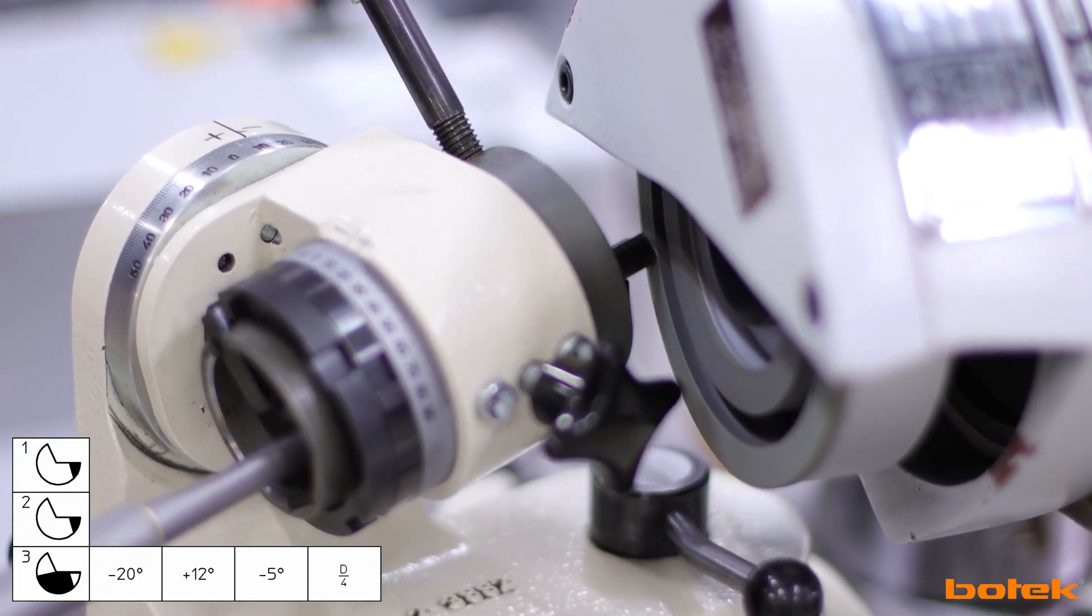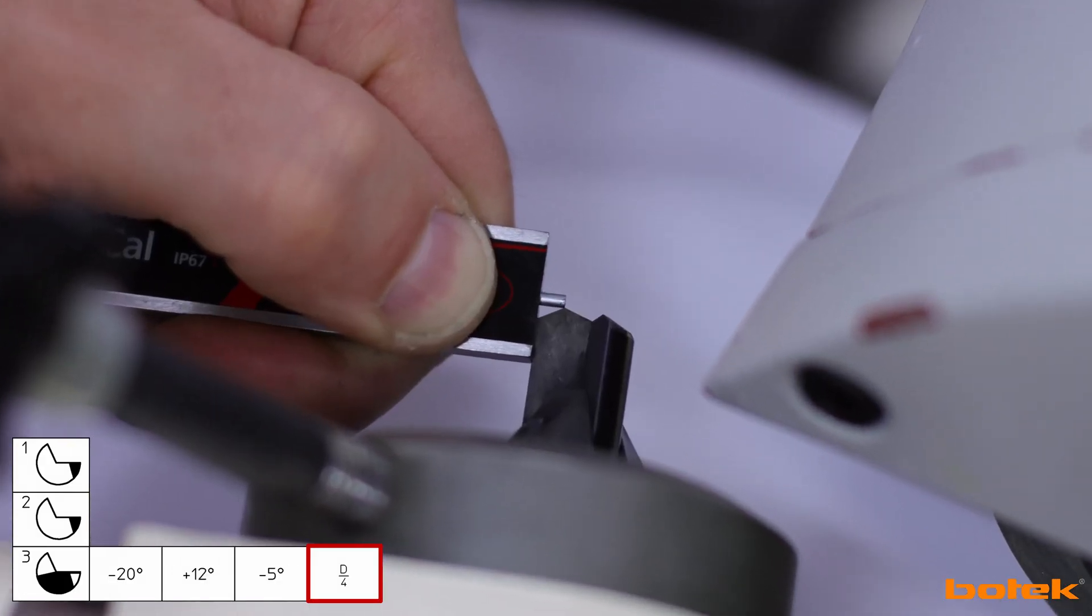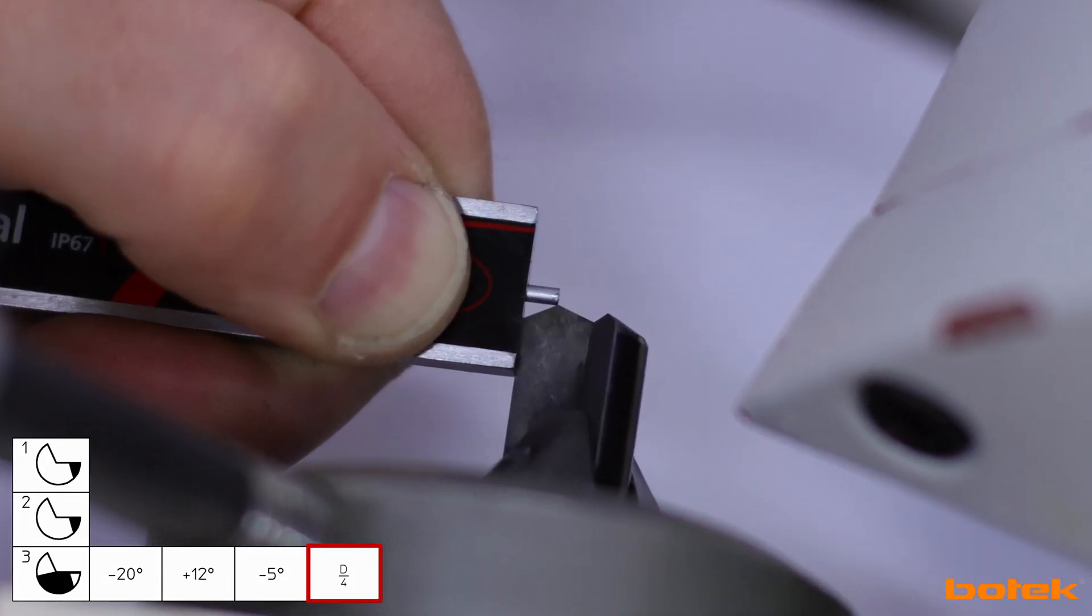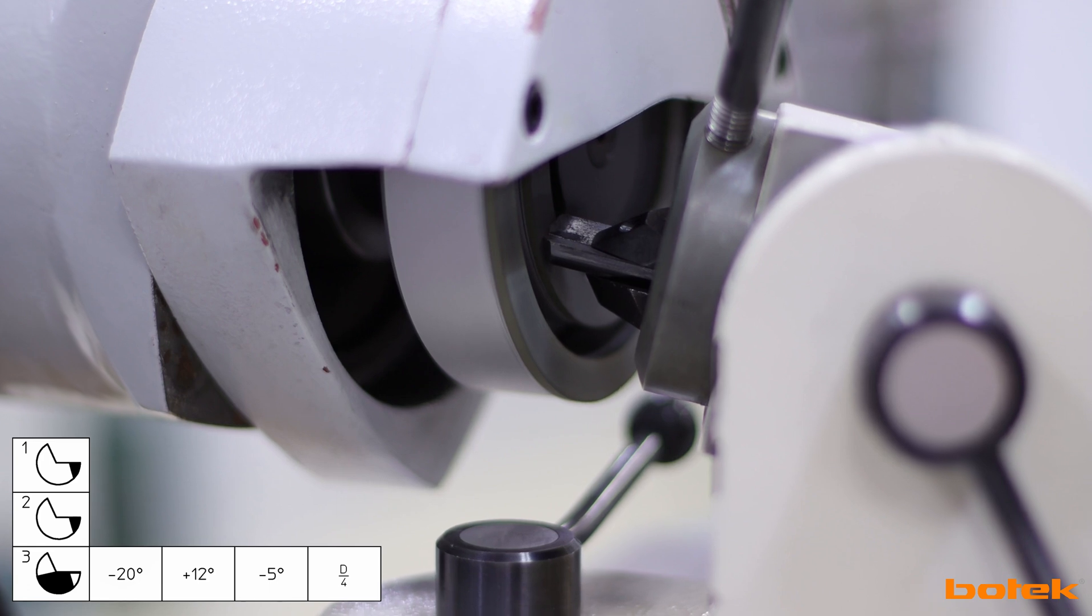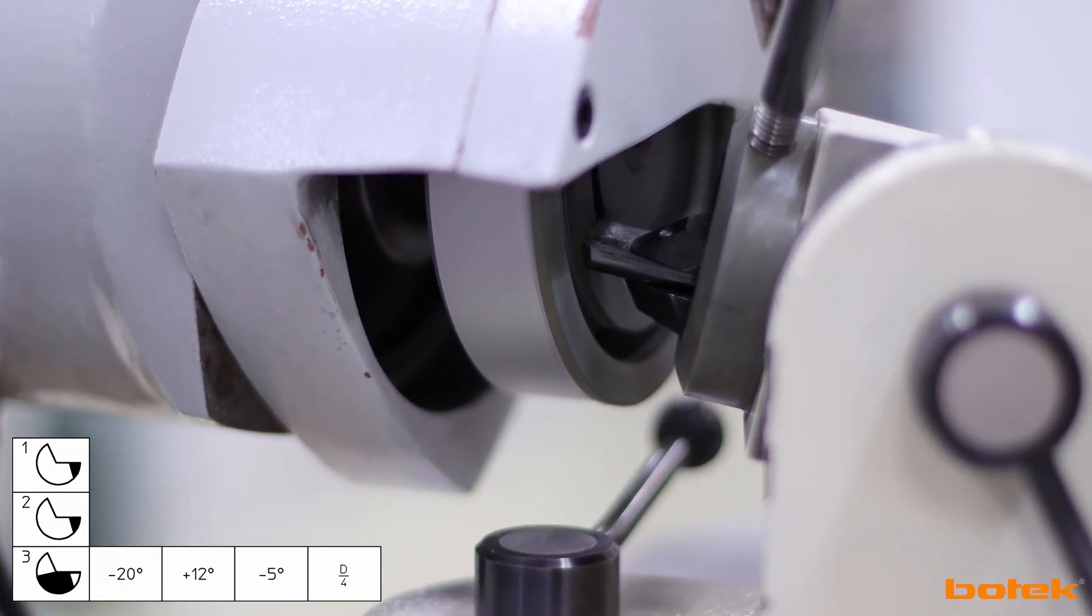Grind the inside cutting edge. Set the caliper gauge to one quarter of the tool diameter to check the position of the tool tip using the depth gauge. The last tenths are also ground with the finishing wheel.